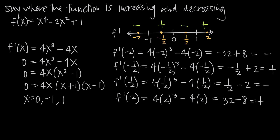A negative value from the first derivative test tells us the original function f(x) is decreasing on that interval, so we draw a decreasing arrow. A positive value tells us the original function is increasing, so we draw an increasing arrow. The pattern is: decreasing, increasing, decreasing, increasing.